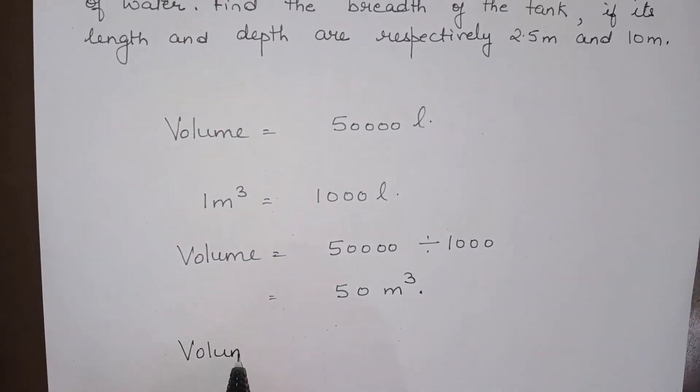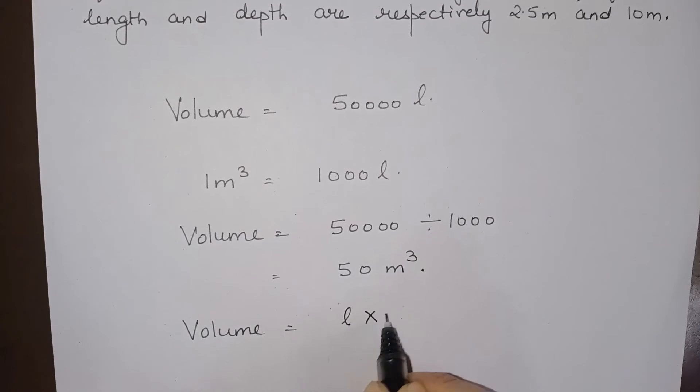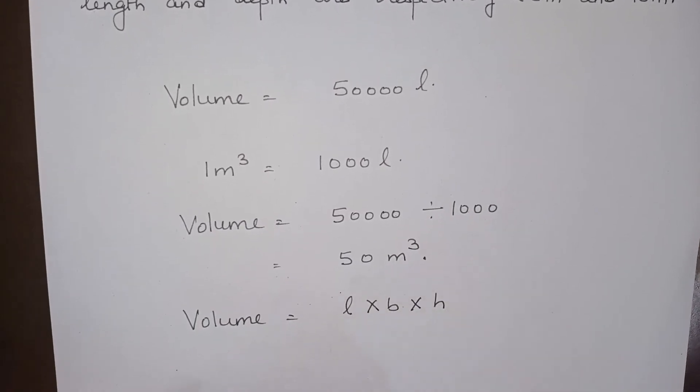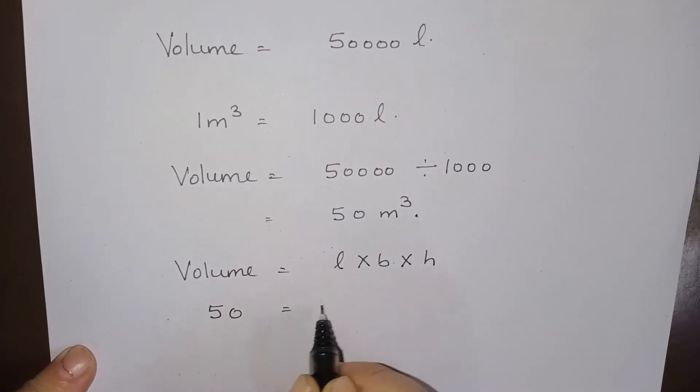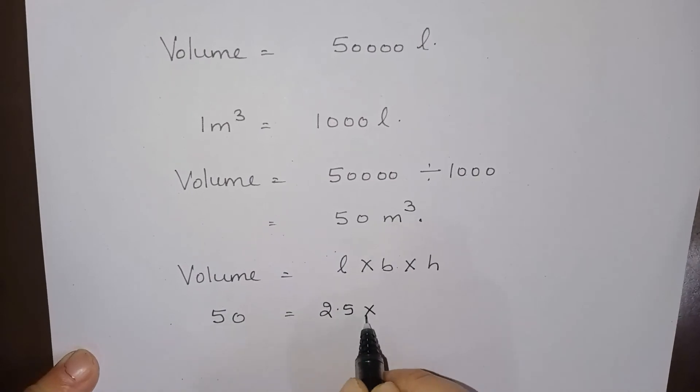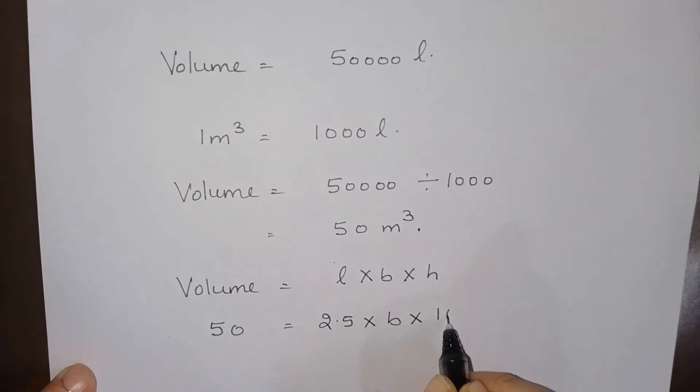Now, volume is given by length into breadth into height. So this is 50. Length is 2.5, breadth we have to find, height is 10.